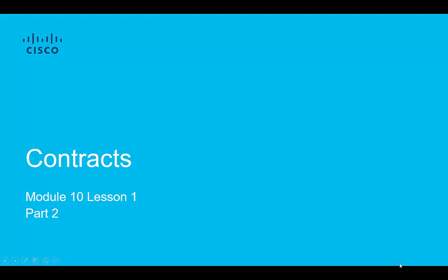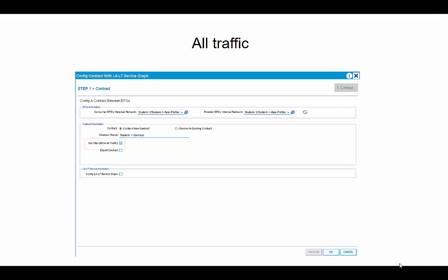Welcome to Module 10, Lesson 1, Part 2. We're continuing to talk about contracts, and we're going to focus on configuration. One of the things you can do if you want to set up communication between two EPGs and you're not 100% certain on the exact traffic flows you want to allow is to first just leave everything wide open. You create a contract with no filter — allow all traffic.